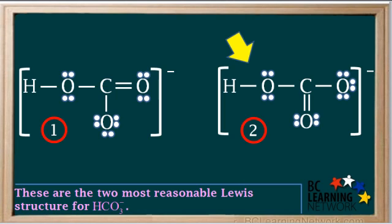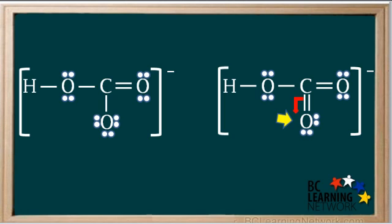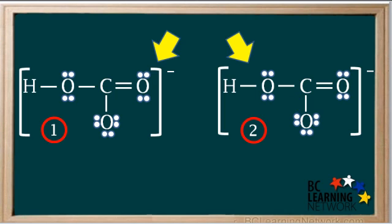Now let's focus on structure 2. If one of the lone pairs from the oxygen atom on the right left that oxygen atom and formed another bond with the carbon atom, it would result in the carbon atom temporarily having five bonds. It would force the electrons from one of the double bonds to move onto the bottom oxygen atom and form another lone pair, leaving only a single bond between the carbon and the bottom oxygen. Structure 2 has been transformed into structure 1 just by moving electrons without changing the positions of the atoms.